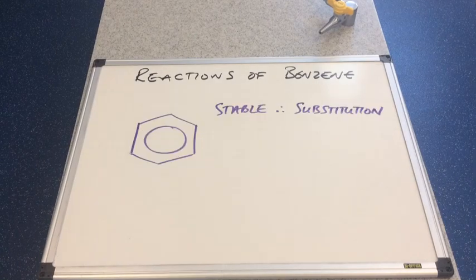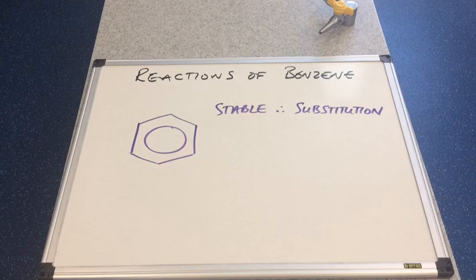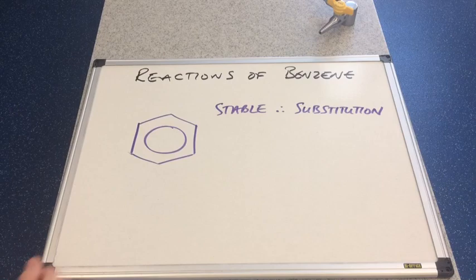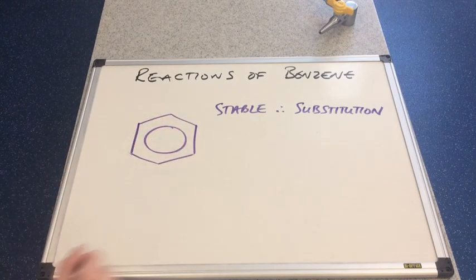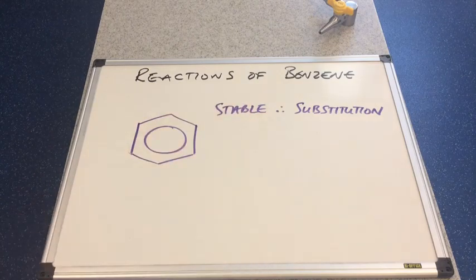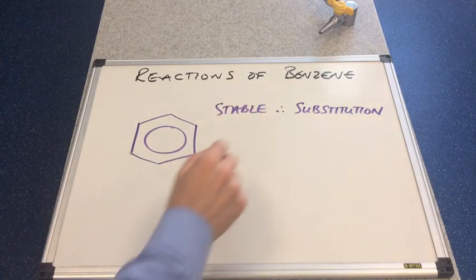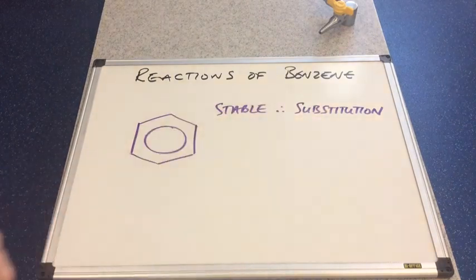We'll spend a moment discussing what kind of reactions benzene undergoes. If you remember from the first benzene video about its structure and bonding, this pi electron cloud, this delocalized electron cloud, adds stability to the molecule and more stable molecules undergo substitution reactions.